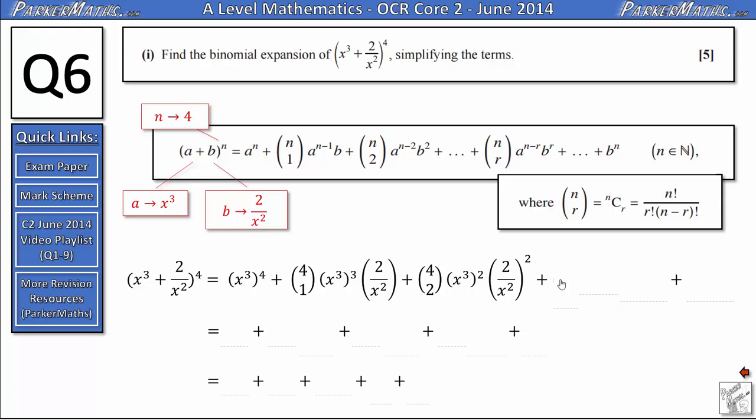For the fourth term we're going to have 4 choose 3. We're going to have x cubed just to the power of 1. And we're going to have 2 over x squared cubed. Finally at the very end we have b to the power of n, which is going to be 2 over x squared to the power of 4. At the moment this looks a bit messy so we're going to need to tidy it up a bit.